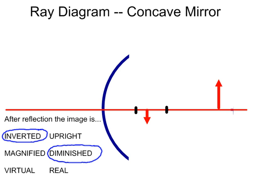And then finally, is it virtual or real? Because the intersection of the lines took place on the same side as the object, it is real.